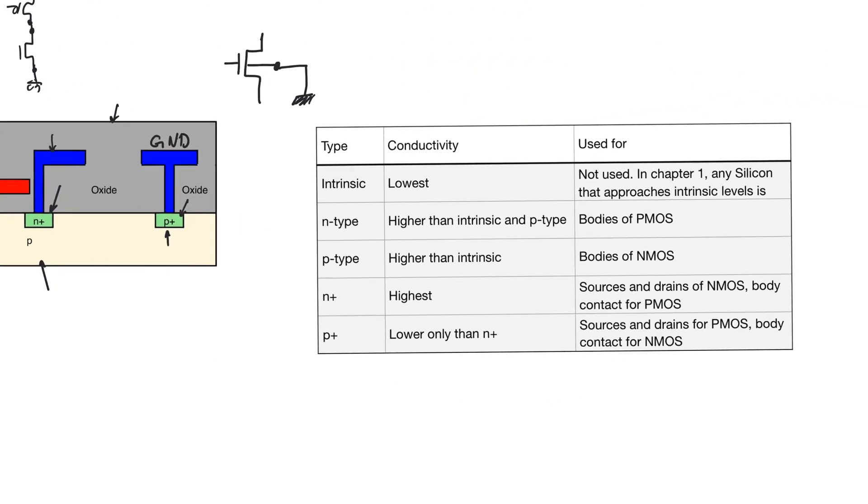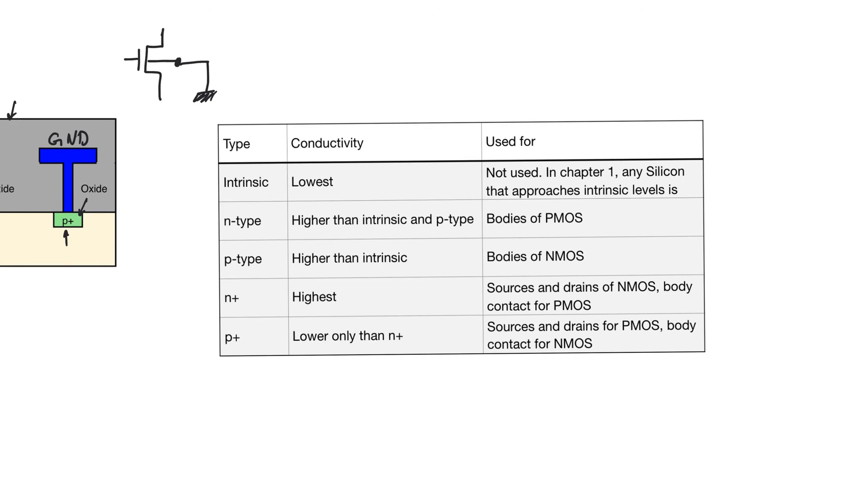So if you go and look at an account of the materials that we have used so far, we have intrinsic silicon, which we actually don't use. So we don't ever use undoped silicon because the conductivity of undoped silicon is really low. So there's no advantage. There's no real advantage to using it.